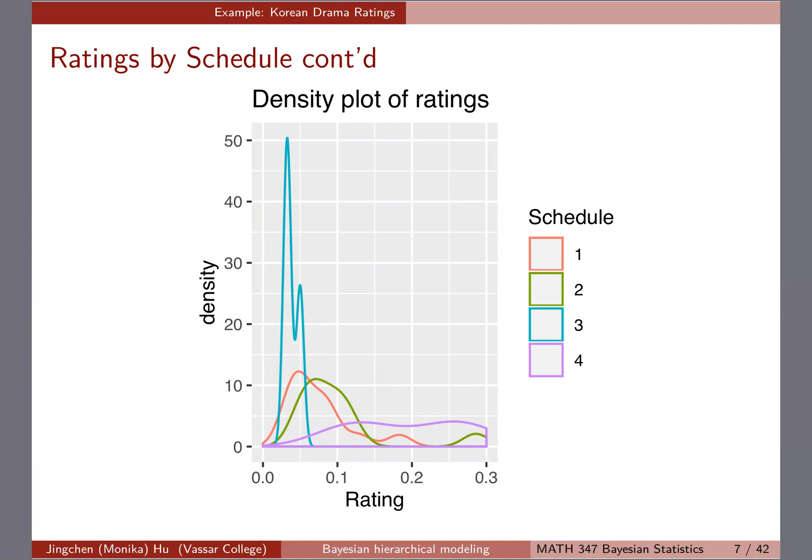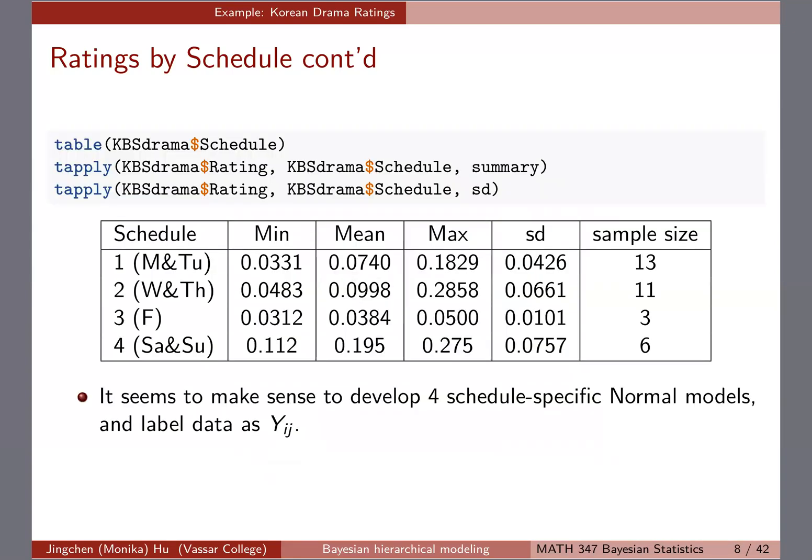Number four has a much wider spread. If you're trying to use a normal model to capture these features, it probably makes sense to give specific mean and specific standard deviation for the four different models. That's why we're labeling data YIJ—this is the first time you're seeing this kind of labeling or representation.